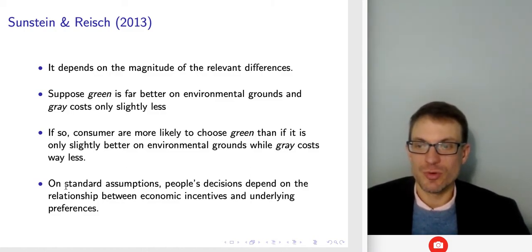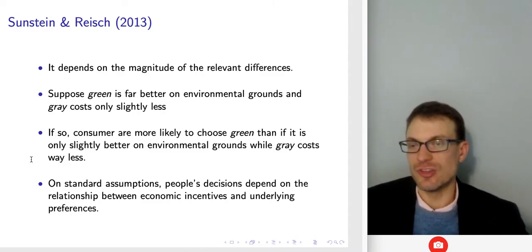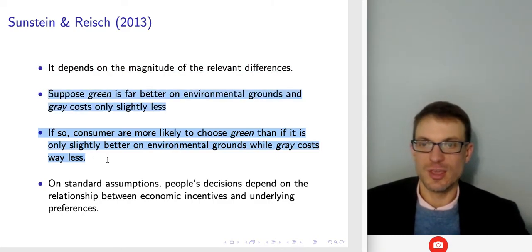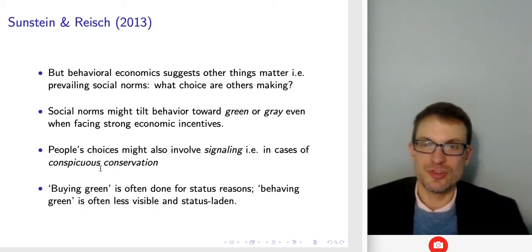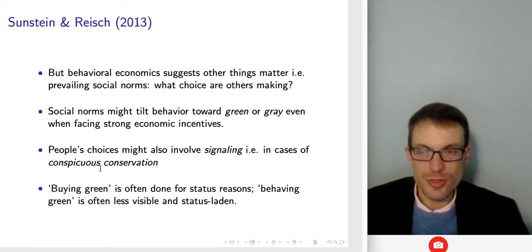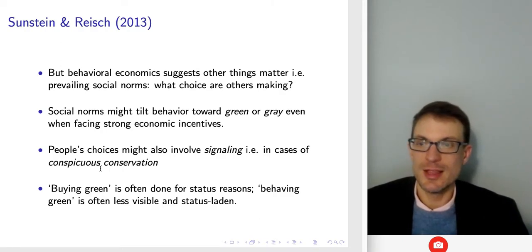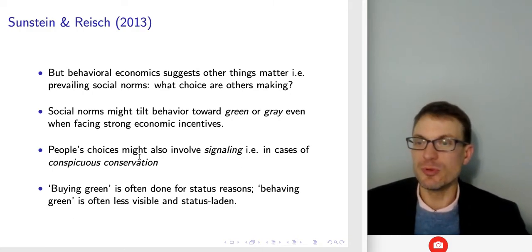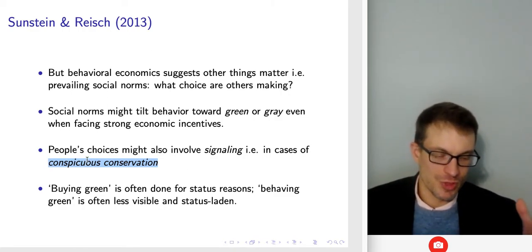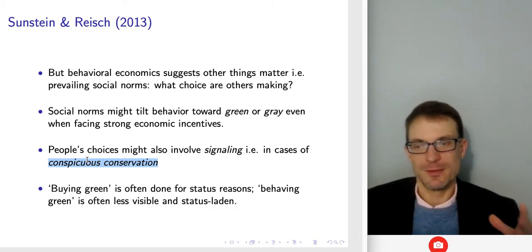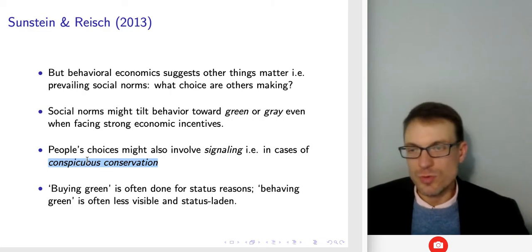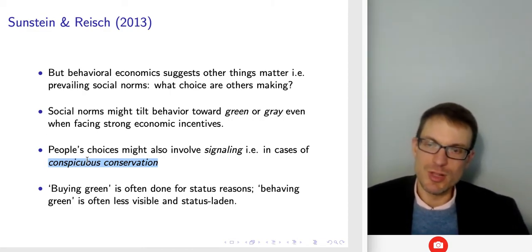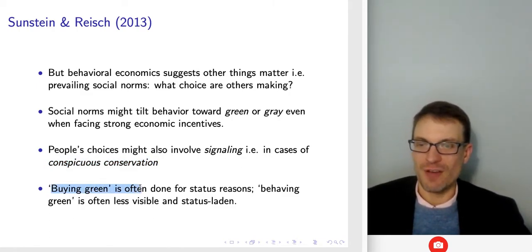On standard assumptions, people's incentives depend on the relationship between economic incentives and underlying preferences. Behavioral economics suggests other things matter, such as prevailing social norms — what choice are others making? Social norms might tilt behavior towards green or gray even when facing strong economic incentives. For instance, people's choices might involve signaling, such as cases of conspicuous conservation — when the Prius first came out, a lot of people were interested not only in being green, but in having people realize they're green.